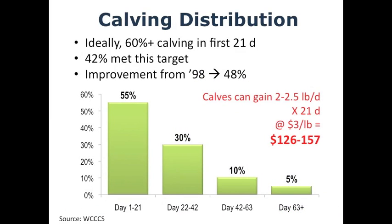On calving distribution — and there will be an announcement shortly about a 21-day calving challenge — ideally you want 60% or more of your females calving in the first 21 days of your calving season. 42% of producers in the Western Canadian Cow-Calf Survey met this target. The average percentage of cows calving in the first 21 days improved from 48% in 1998 to 55% in this survey.